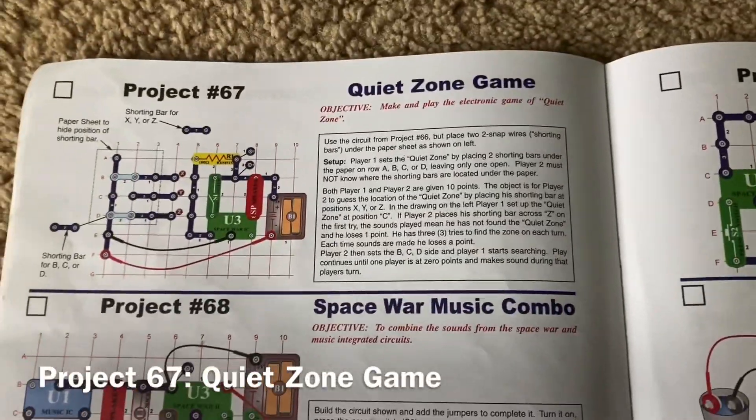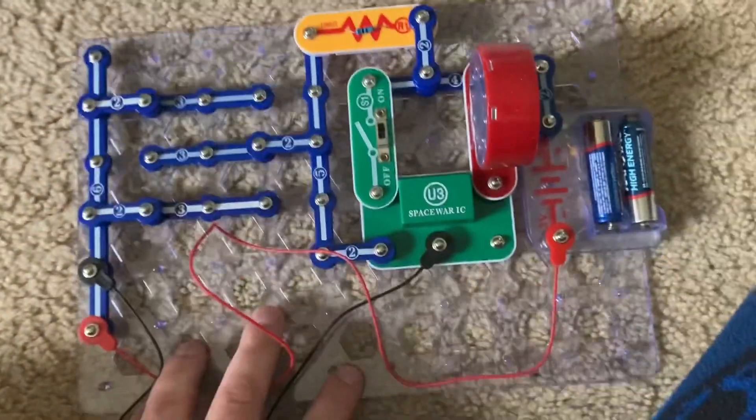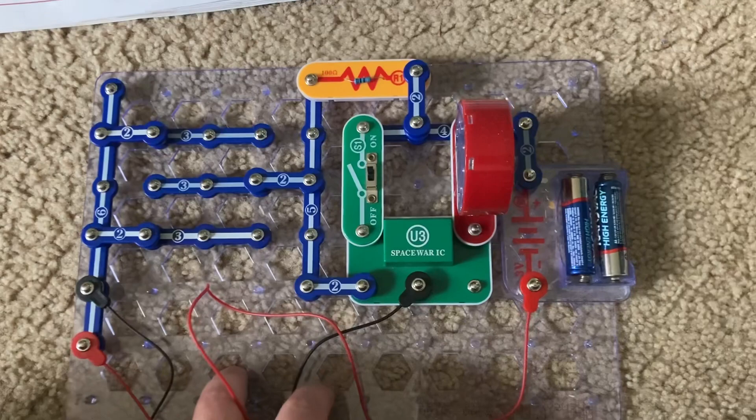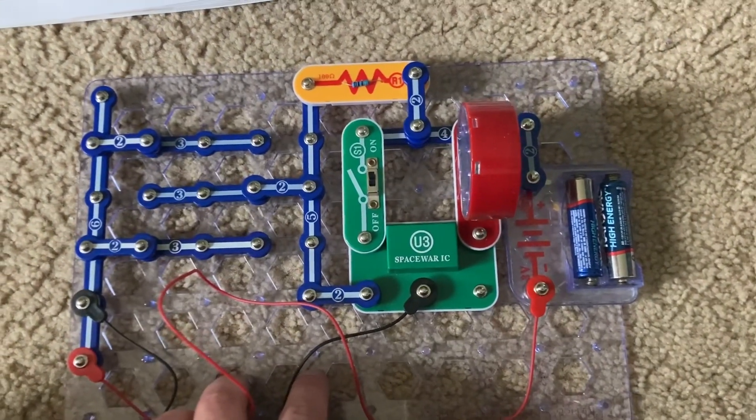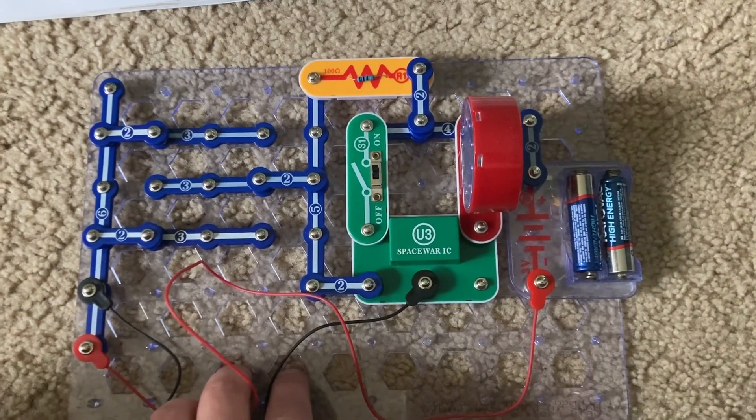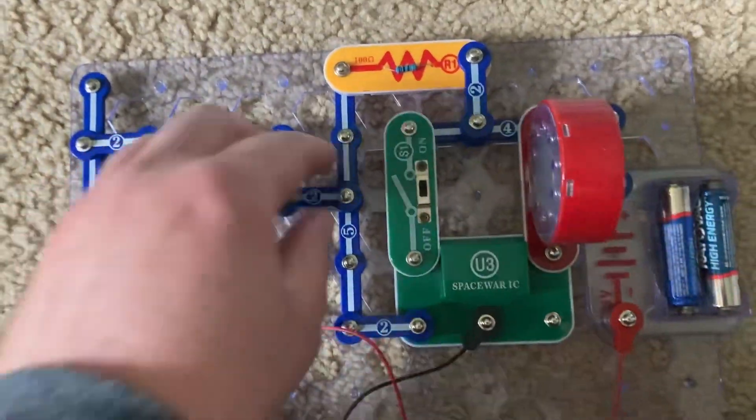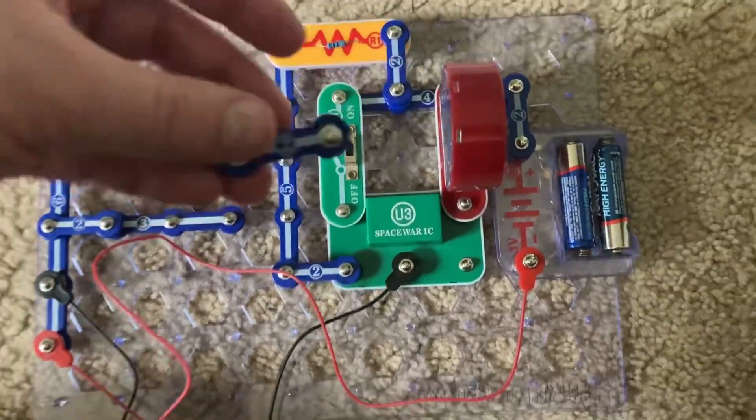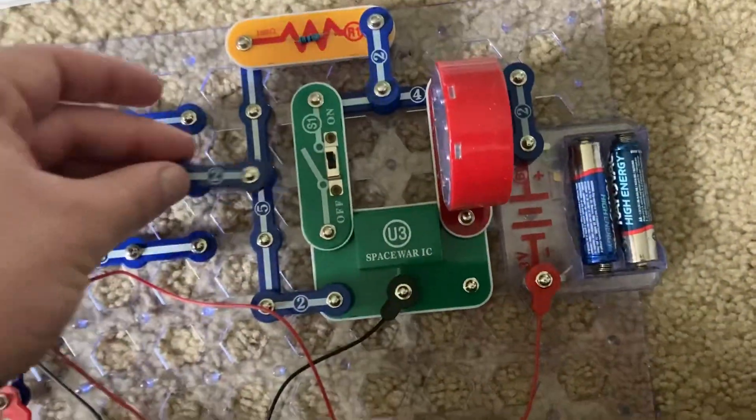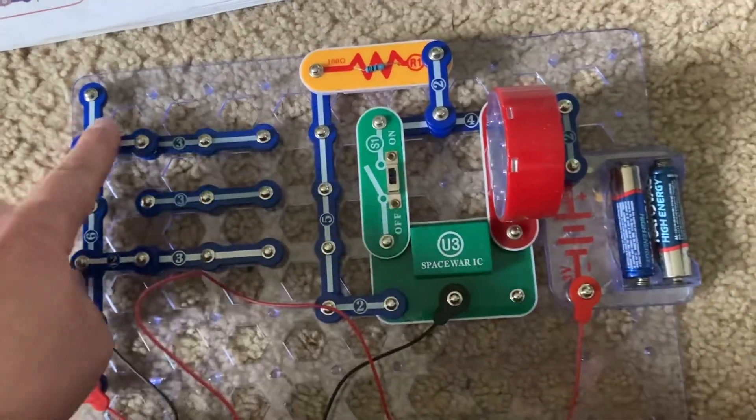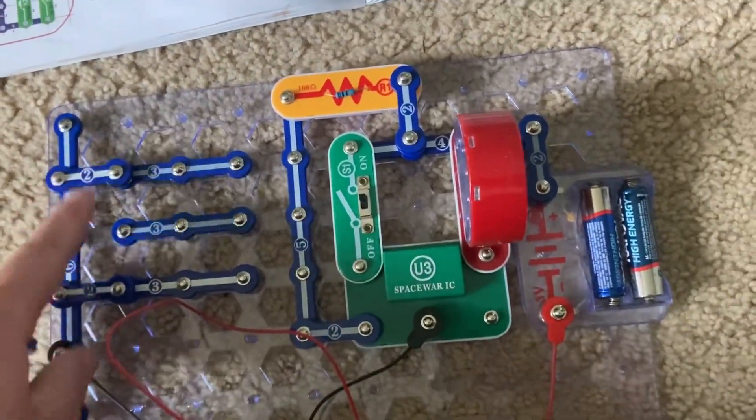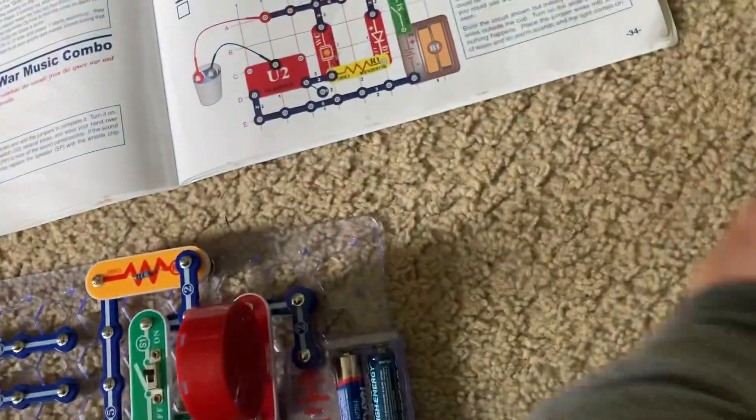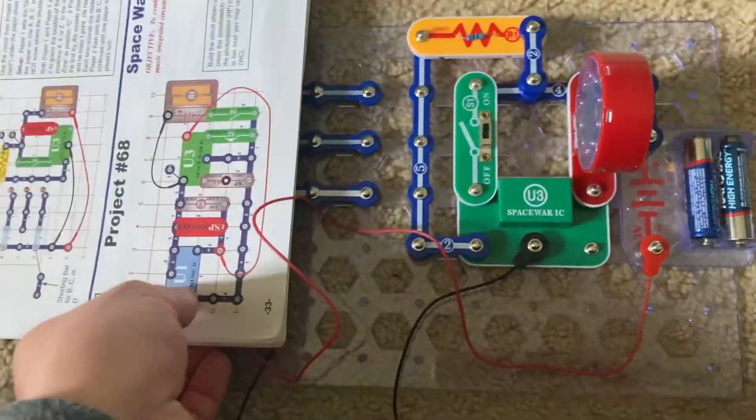Project 67 is the Quiet Zone game. The purpose of this game is basically opposite that of the previous game, in which now a player has to find what is called the Quiet Zone by connecting a two-snap wire across the three-snap wire that does not have two-snap wires connected on the other end. These would be hidden, once again, by a piece of paper.